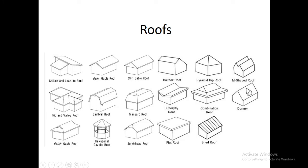We have a salt box roof, pyramid, hip roof, an M-shaped roof, a hip and valley roof which is very common especially in residential buildings. We also have a gambrel roof — this looks like a barn roof — a mansard roof, butterfly roof, combination roof which is like a combination of a gable mixed with a flat roof, a dormer roof, shed roof, flat roof, jerking head roof, hexagonal gazebo roof, and a Dutch gable roof. Those are just some of the different types of roofs.